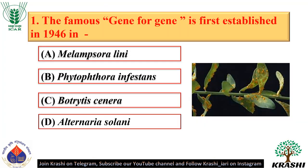Question number 1. The famous gene-for-gene hypothesis was first established in 1946. It was established in Melampsora lini, a pathogen that causes linseed rust, and the hypothesis was given by H.H. Flor.